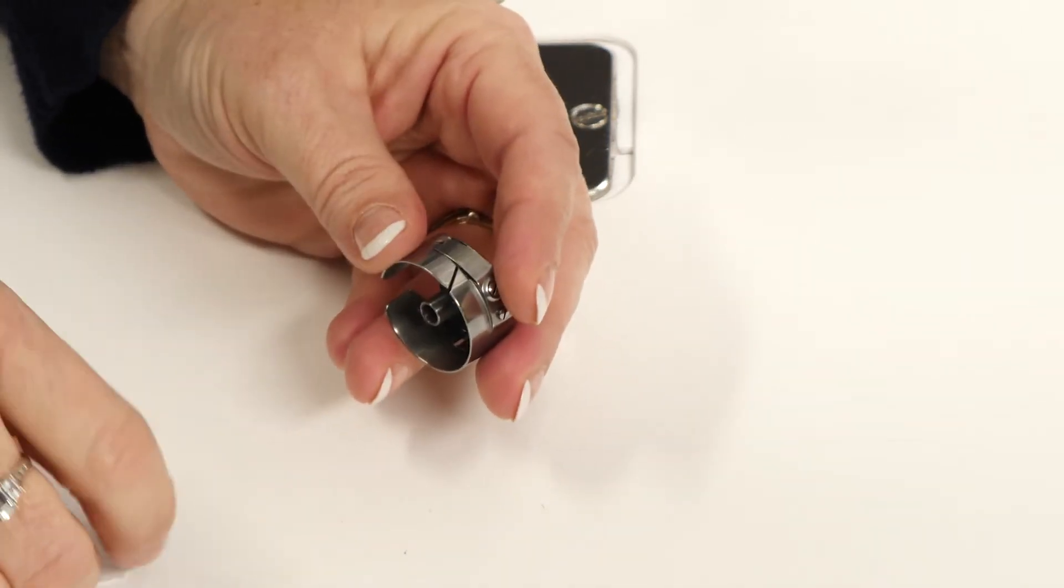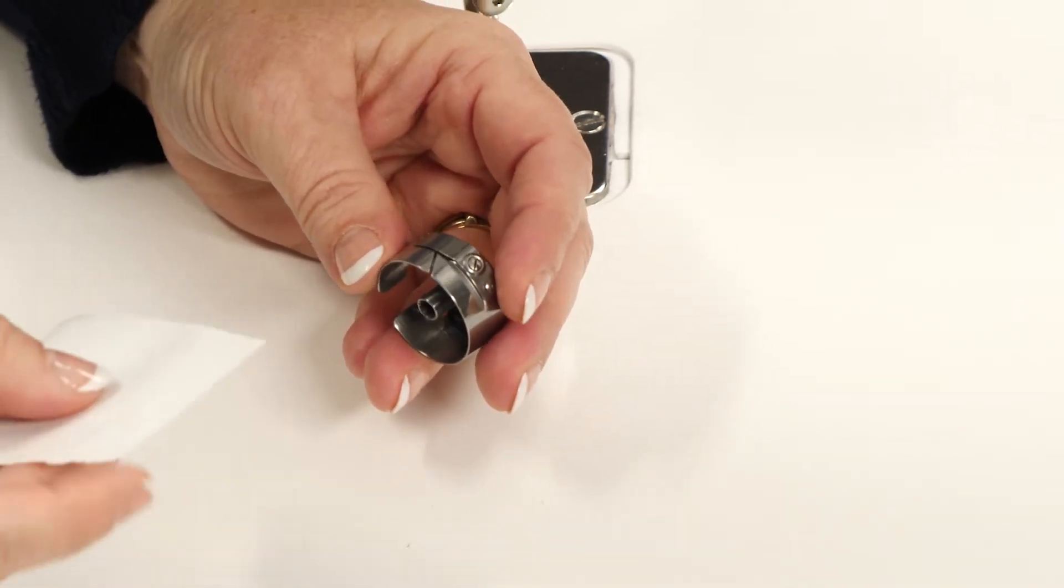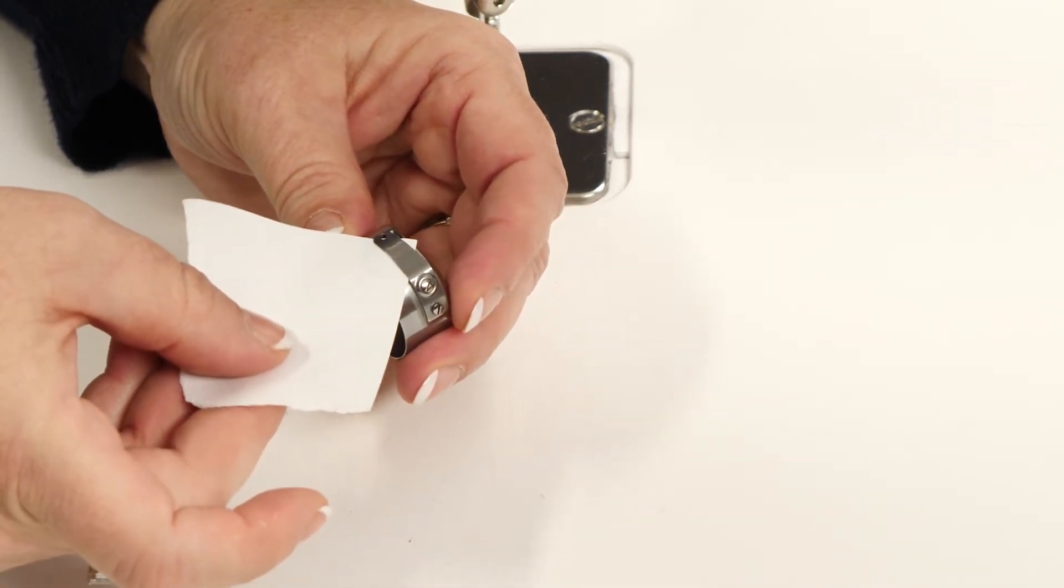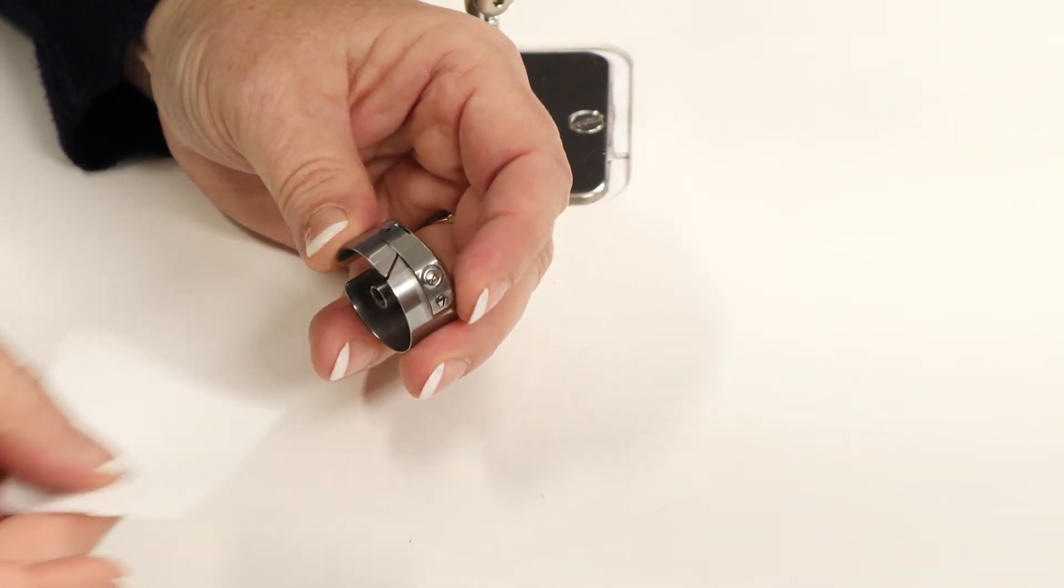At that point, you also need to take either a business card or a piece of paper and just slide it underneath this tension spring to make sure there's no lint underneath there.